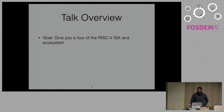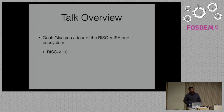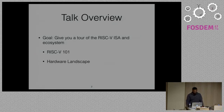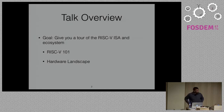The talk will start with RISC-V 101 — a bit of background on the ISA, where it came from. Then I'll talk about the RISC-V hardware landscape. There have been a lot of interesting developments: we actually have RISC-V silicon that anyone can buy now, which is pretty exciting, and there are a lot of open source SOCs and chips. There's also been a lot of work in the software stack in the last six to twelve months.